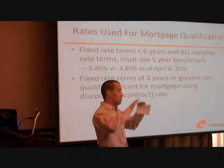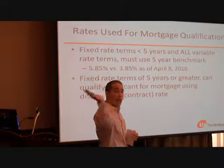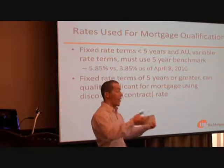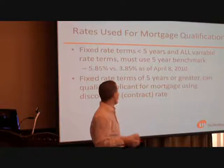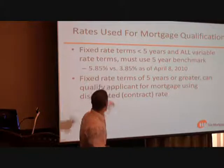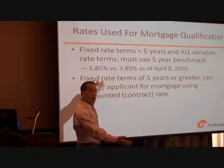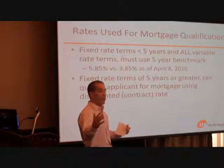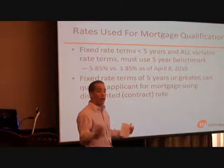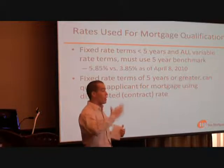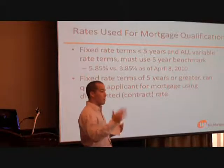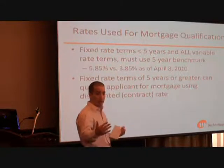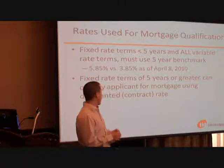If someone says forget it, they are happy with a five-year fixed rate term or any term longer than five years with a fixed rate, they can use the contract rate — the discounted rate they are actually going to get. The point of using this higher benchmark rate, even though someone might be taking a product with a lower rate, is that the government wants to make sure someone is going to be able to afford their payment over a significant amount of time. We all know we have record low rates — variable rates are at rock bottom — they are only going to go up. This ensures people can afford their mortgage if rates go up by 2% on a variable, or if they have to renew in a year and rates have gone up.